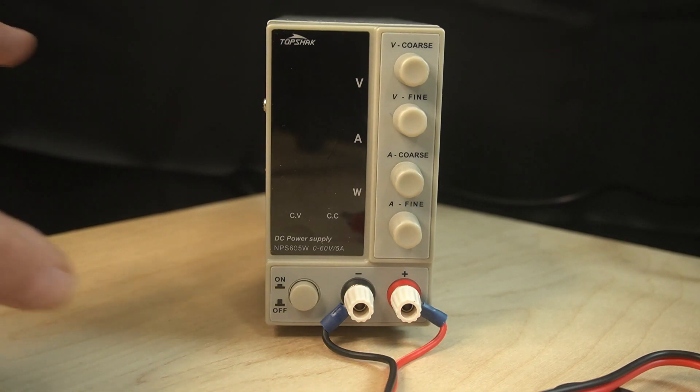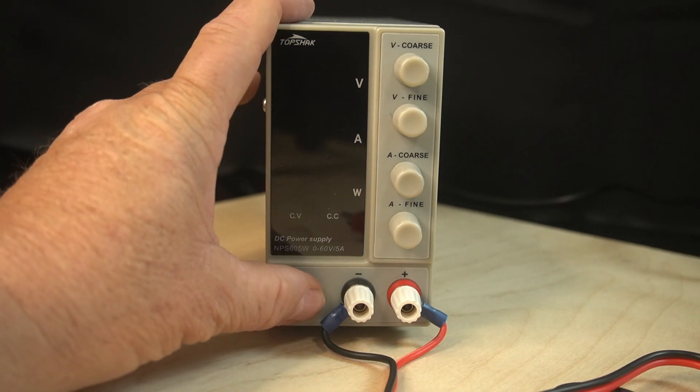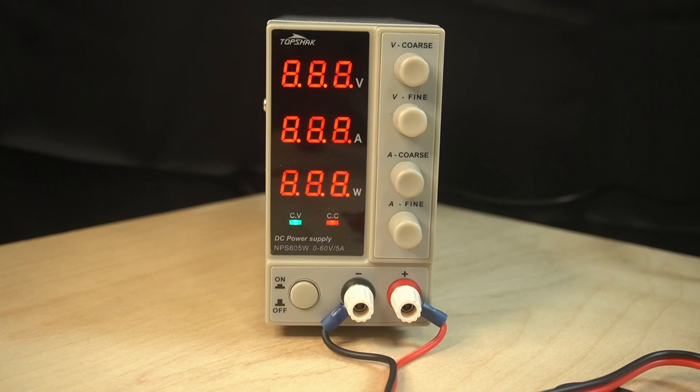Okay. Let me show you how you turn this on. There's got the power switch here. It turns it on. Takes a few seconds for it to power up. The model for this is the MPS605W. The power is 300 watts, has an AC input of 115 or 230 volts. The DC out is 0 to 60 volts with 5 amps. And it weighs 1.6 kilograms.